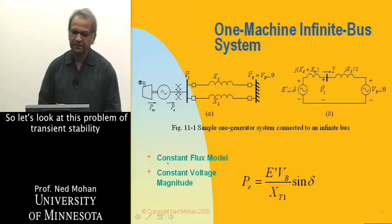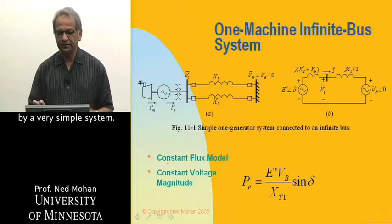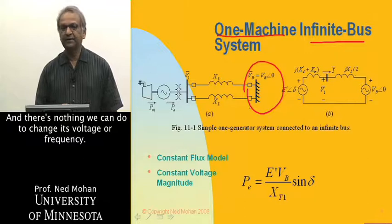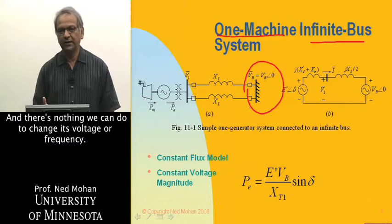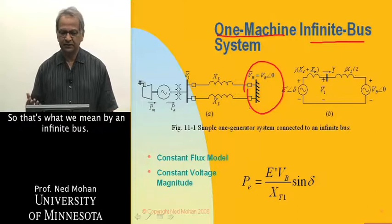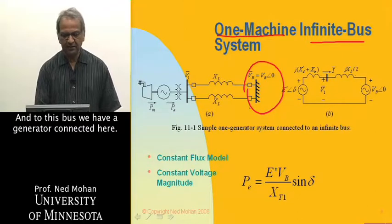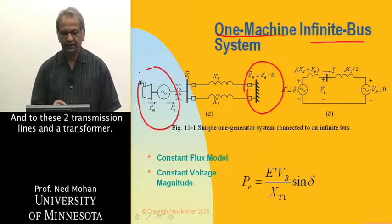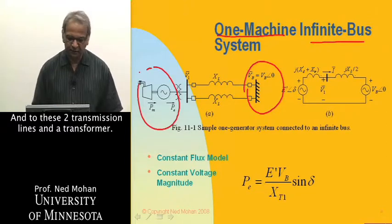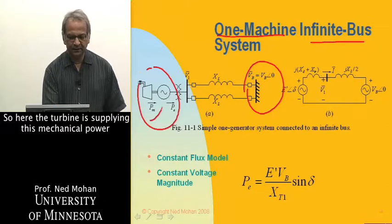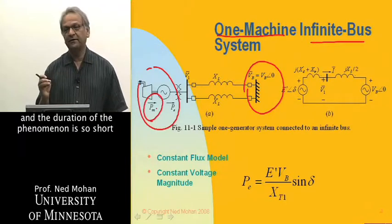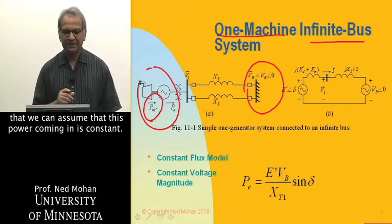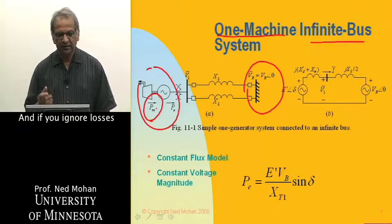Let's look at the transient stability problem using a very simple one-machine infinite bus system. The infinite bus has fixed voltage and frequency, with zero internal impedance. A generator is connected to this bus through two transmission lines and a transformer. The turbine supplies mechanical power, and the duration of the phenomenon is so short that we can assume this incoming power is constant. If we ignore losses, the electrical power given out equals the mechanical power coming in in steady state.